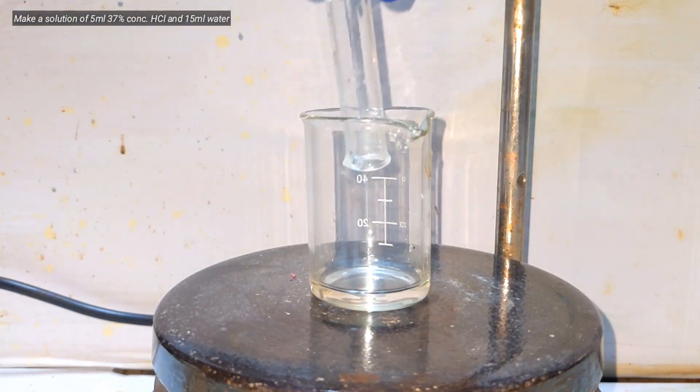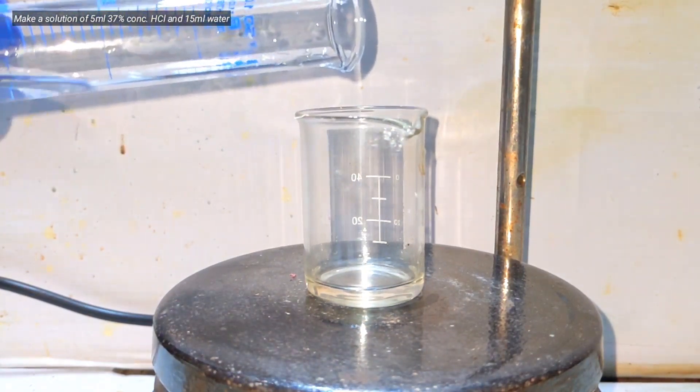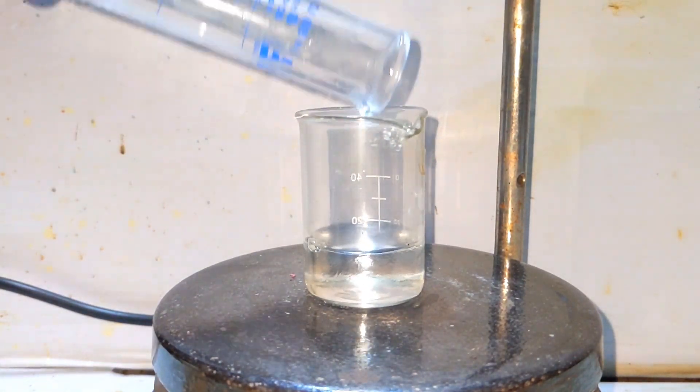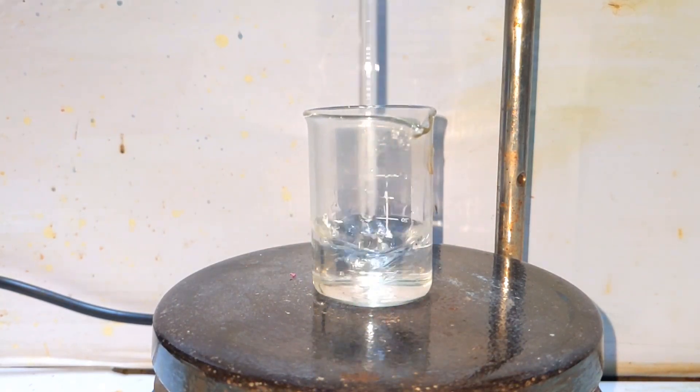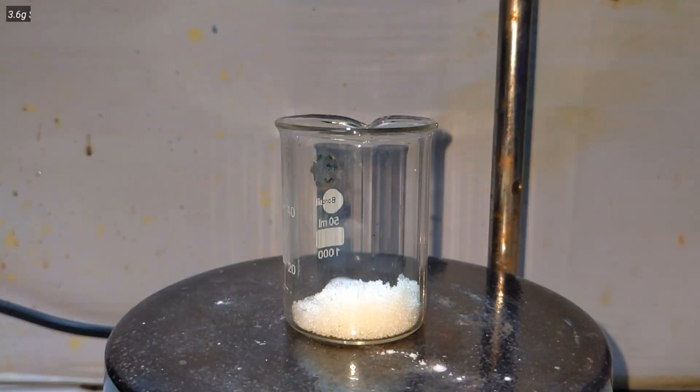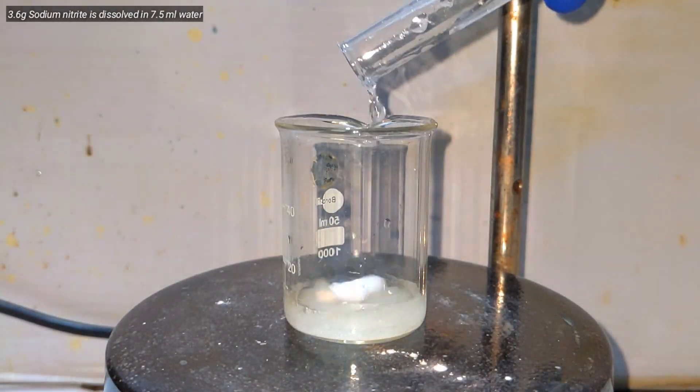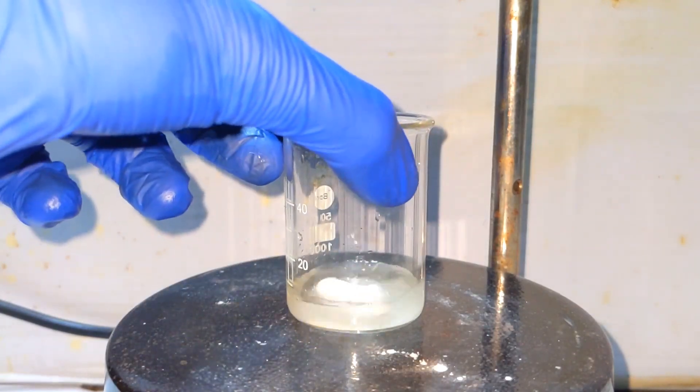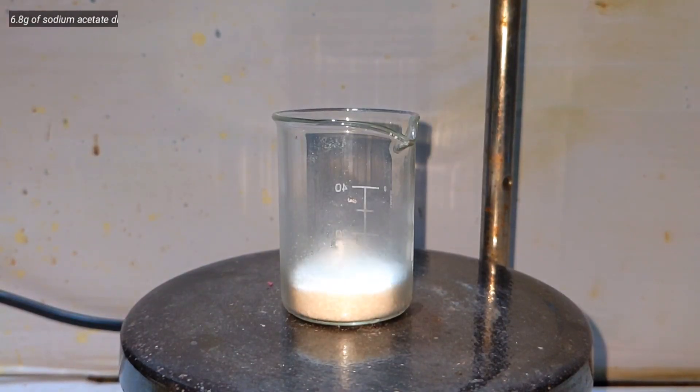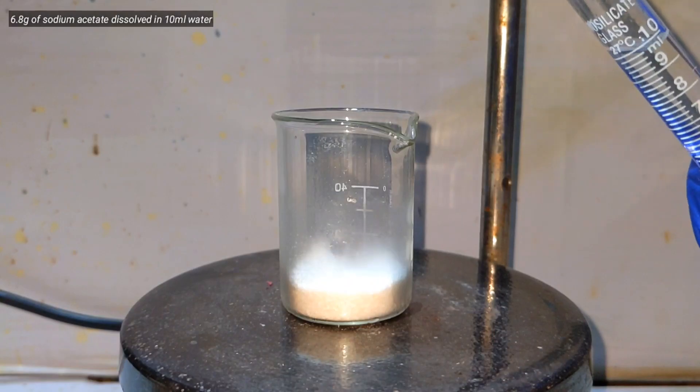We begin by making certain solutions. First we make a dilute hydrochloric acid solution by adding 5 milliliters of concentrated 37% HCl to 15 milliliters of distilled water and stirring it well. Next we make a sodium nitrite solution by dissolving 3.8 grams of it in 7.5 milliliters of water and then it is placed in an ice bath to cool down.